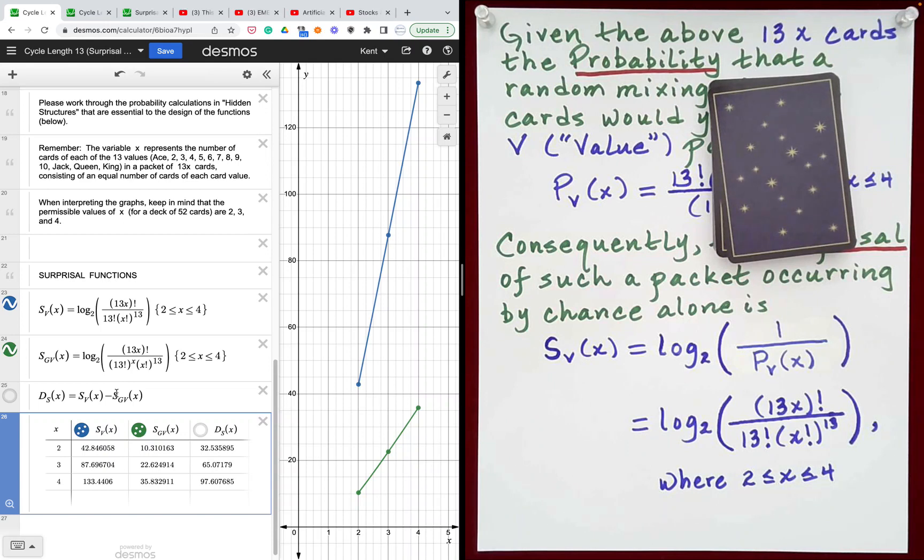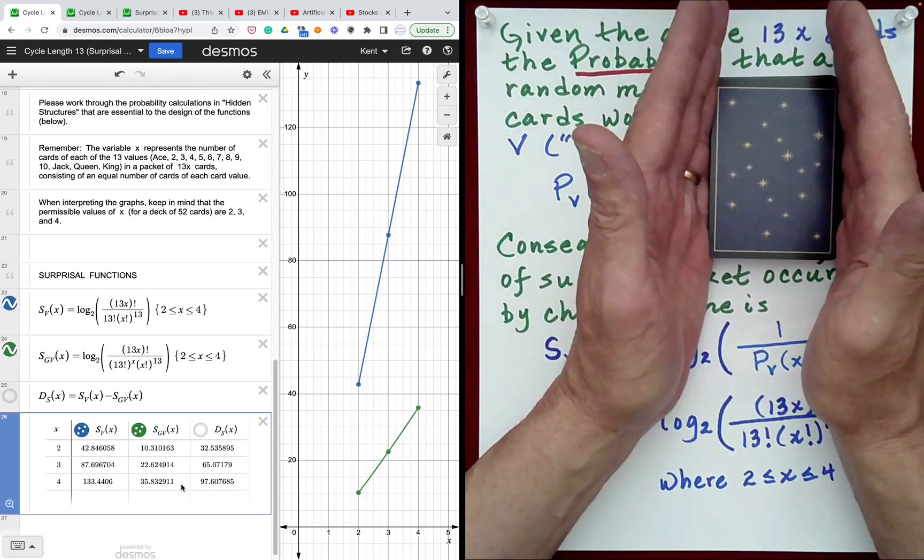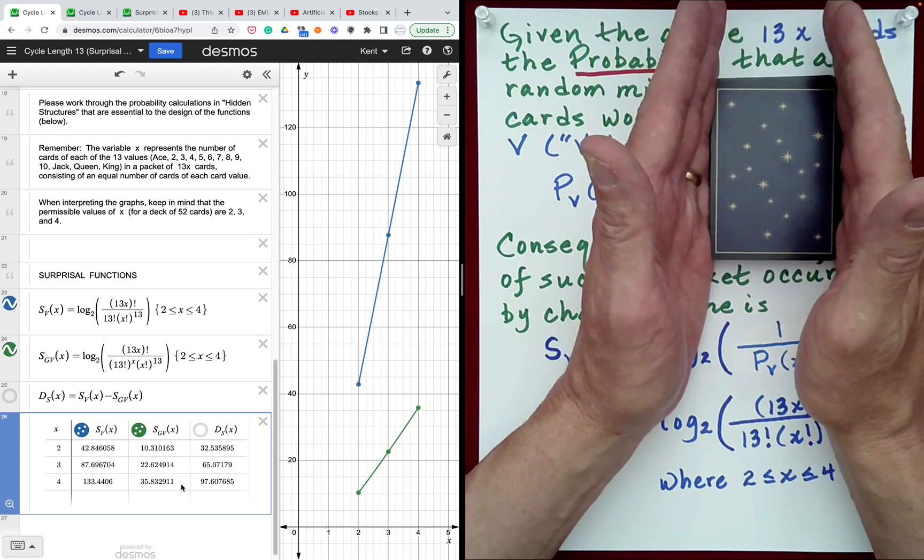If you take a look at the second surprisal function, which is the green one here, this is the surprisal function for the Gilbreth Shuffle version of the deck organization that we started with. In fact, the surprisal value for the structure that I'm going to reveal in just a moment is 35 bits of surprisal.